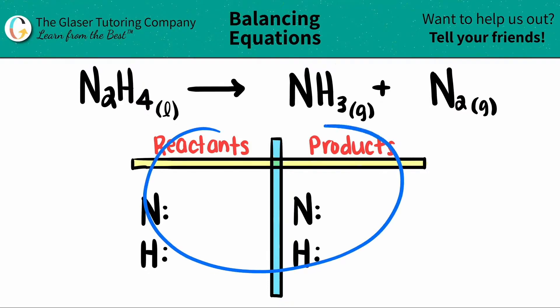I already wrote out our little balancing chart that is a very useful tool, as well as the elements that I see that are on both the left and the right side. So all we have to do is just say how many we have of each element, and then we'll get to balancing.